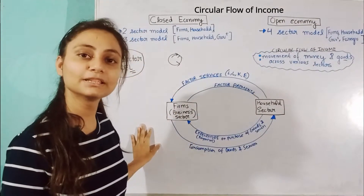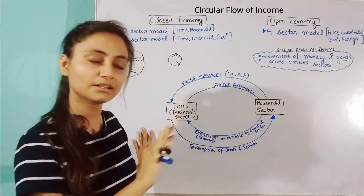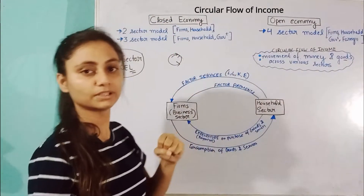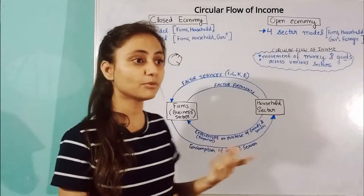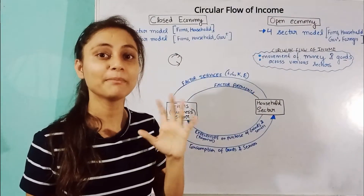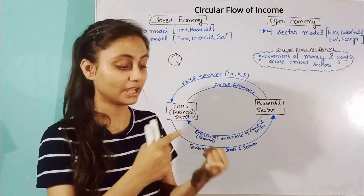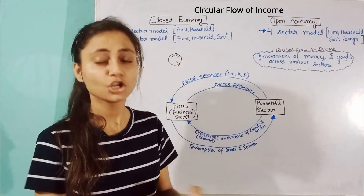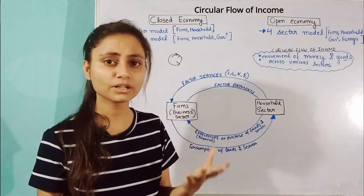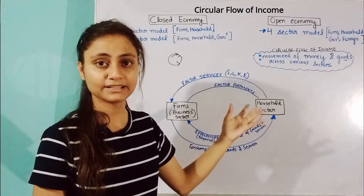In a closed economy, it means we don't trade abroad — there is no foreign sector. In an open economy, we include the foreign sector. There are different sectors to understand: the producer sector which handles production, the household sector which handles consumption, then the government sector which covers production, consumption, and investment, and then the foreign sector as the fourth sector.